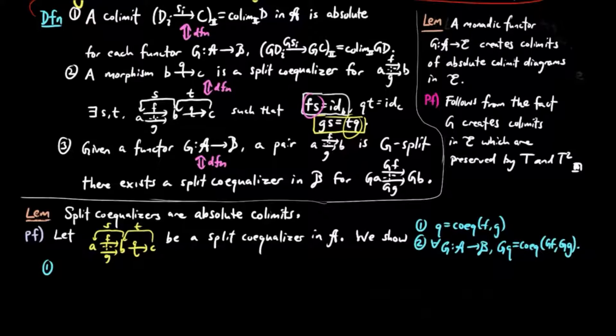To prove one, let's take a morphism H such that HF is equal to HG. We claim that H factors through Q via HT. We have TQ is equal to GS, by one of the equalities in the definition of a split co-equalizer above, then also HG is equal to HF by our assumption on H.